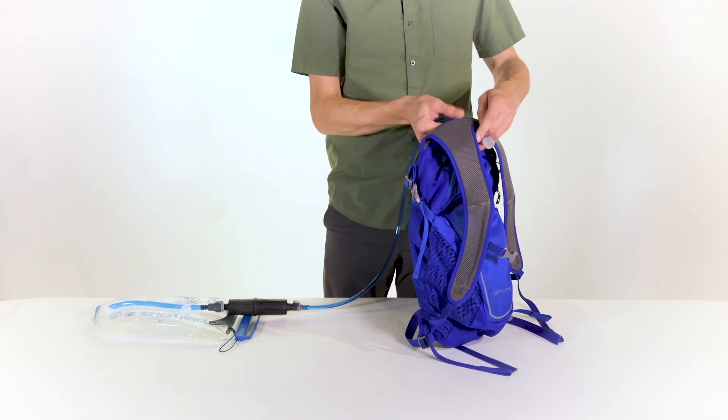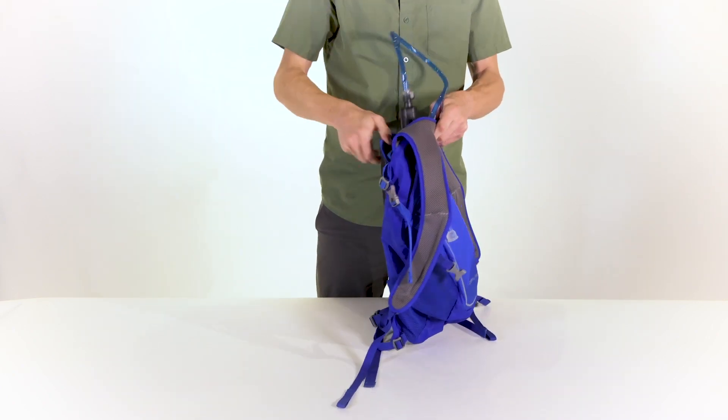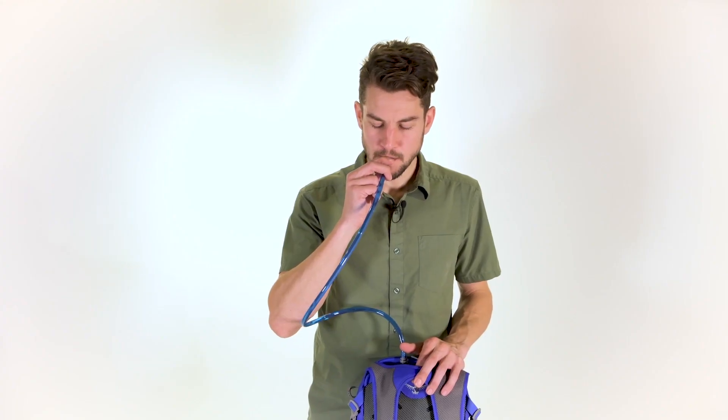Place the system into your pack. Ensure the hose does not kink when wearing the pack. Open the bite valve and drink.